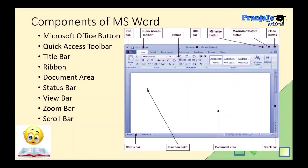Then next we have the Title Bar. The Title Bar shows the name of the saved document. If the document has not been saved yet, the default name shown is Document1. This is an important exam question: what is the default name of an MS Word file? The answer is Document1.